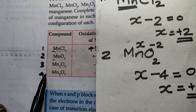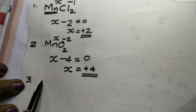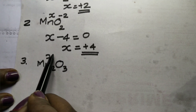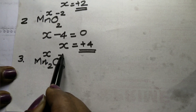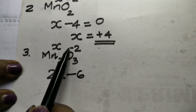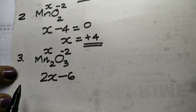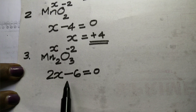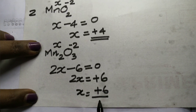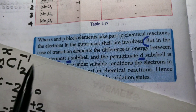For Mn₂O₃, we have 2 manganese atoms. Setting 2x plus 3 times minus 2 equal to zero: 2x minus 6 equals zero, so 2x equals plus 6, and x equals plus 3.